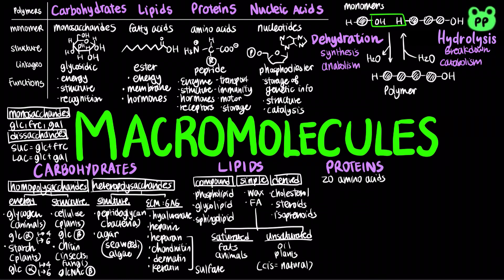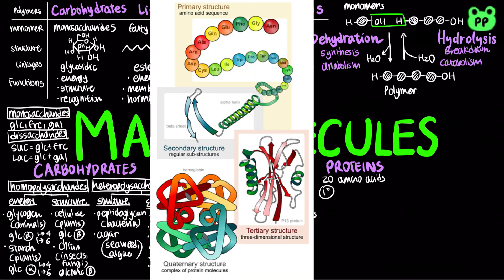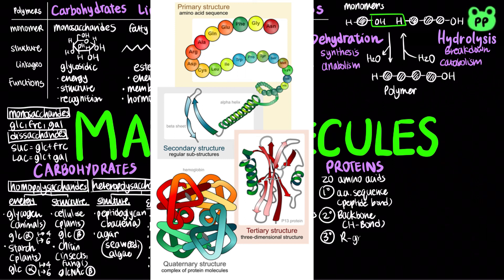Proteins are typically made out of 20 common amino acids and consist of four levels of structure. The primary structure refers to the sequence of amino acids linked by peptide bonds. The secondary structure results from hydrogen bonds between repeating constituents of the polypeptide backbone. The tertiary structure is formed by interactions between R groups. The quaternary structure results when two or more polypeptide chains form one macromolecule. All proteins have tertiary structures, but not all proteins have quaternary structures.